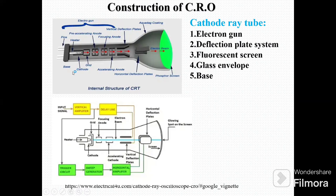See here in this image: here are pins, the base is here, cathode, here is the heater, grid, pre-accelerating anode, accelerating anode, and this is the focusing anode. These are vertical deflection plates, and these are horizontal deflection plates. This is the aquadag coating. This red stream of arrows shows the electron beam. This is the phosphor screen, fluorescent screen.